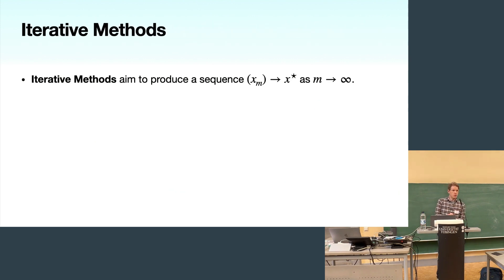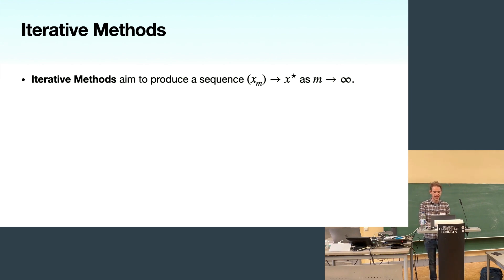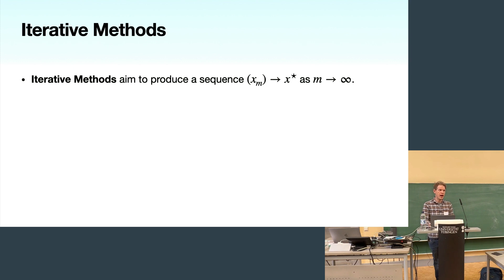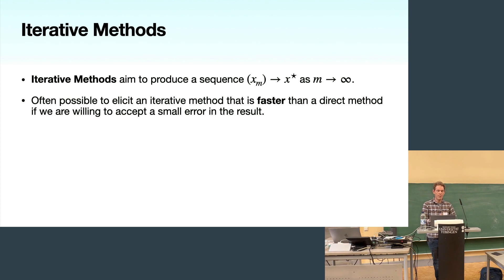Iterative methods aim to address these deficiencies by instead producing a sequence X_m which converges to the true solution X* as m goes to infinity — or hopefully a number much smaller than infinity. The holistic aim is that if we can write down an iterative method where small error is achieved for a small value of m, we can stop early and still have a method faster than a direct method.